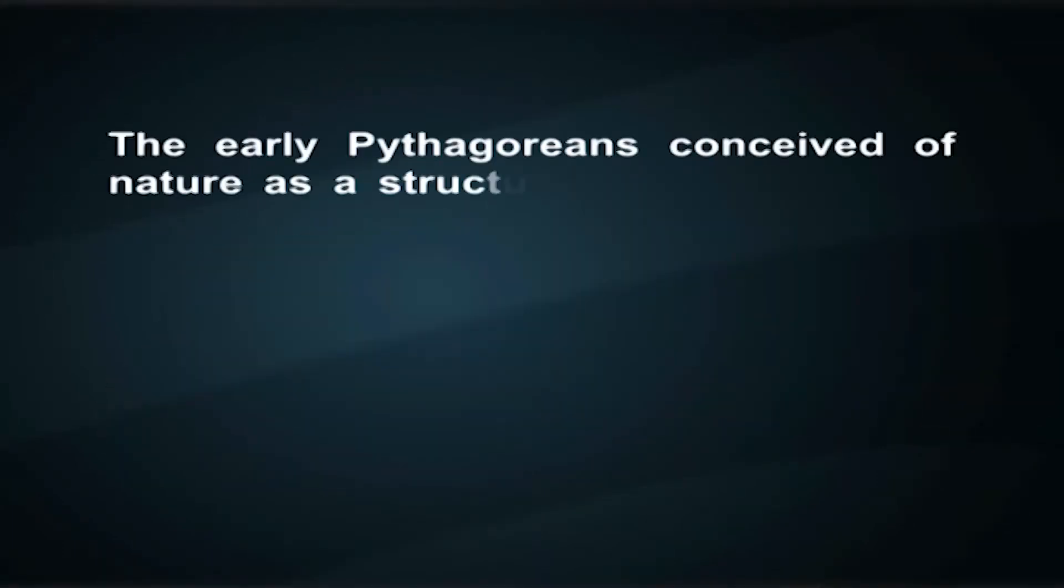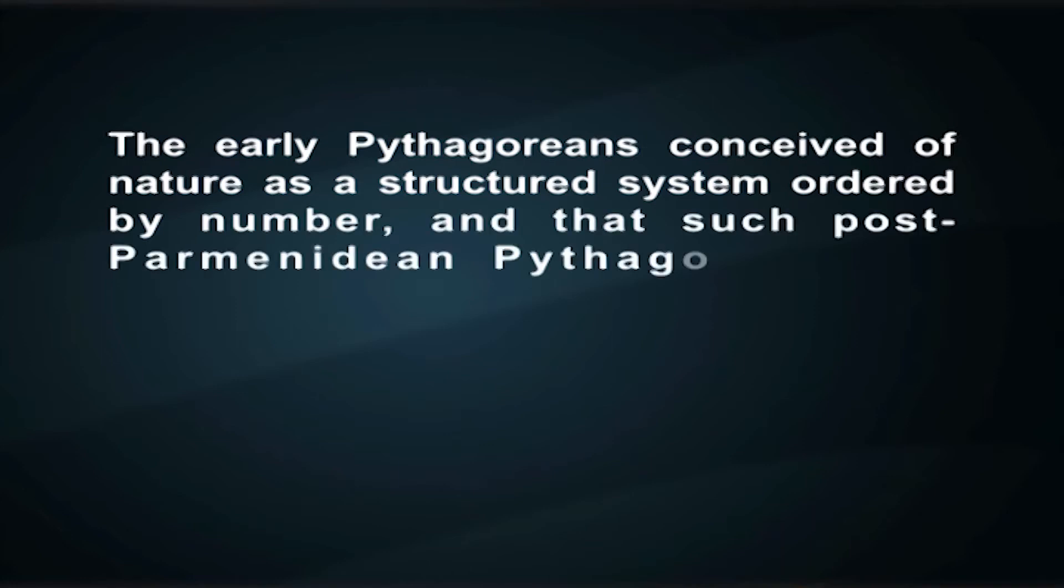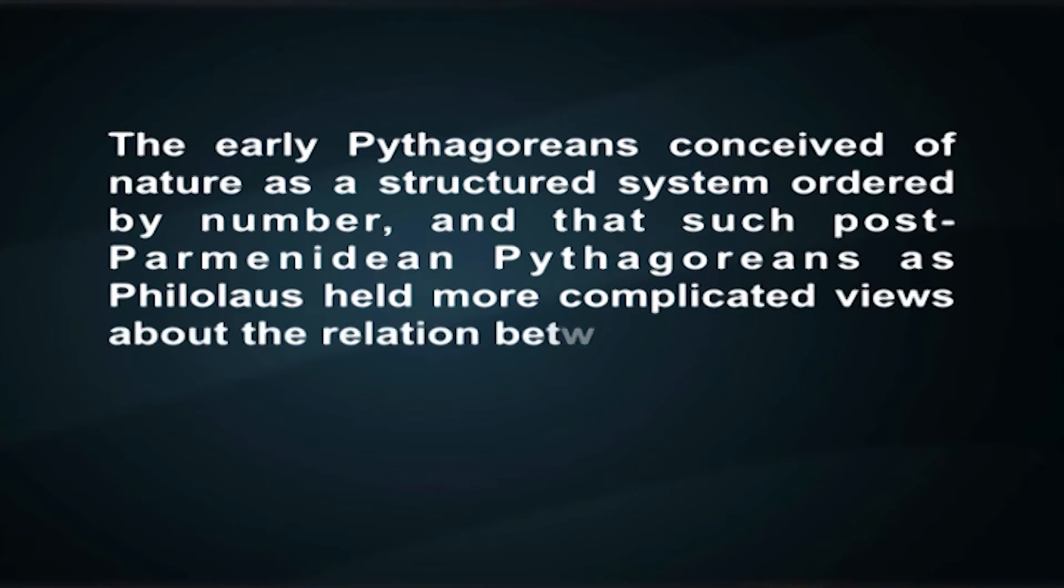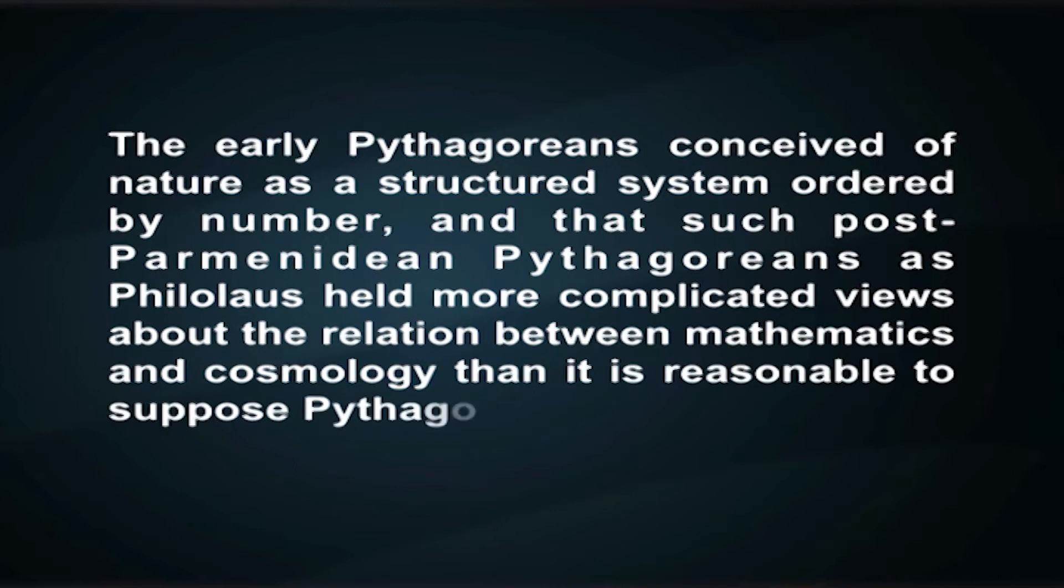The details of Pythagoras' views: he seems to have advocated the immortality of the soul—a novel idea among the Greeks, also developed in Orphic religion—and the possibility of the transmigration of the human soul after death into other animal forms. Pythagorean writers after his own time stressed the mathematical structure and order of the universe. This is often attributed directly to Pythagoras, but recent scholarship has shown that the evidence for attributing this mathematically based cosmology to Pythagoras himself is convoluted and doubtful. The early Pythagoreans conceived of nature as a structured system ordered by number, and such post-Parmenidean Pythagoreans as Philolaus had more complicated views about the relation between mathematics and cosmology than it is reasonable to suppose Pythagoras himself could have advanced.